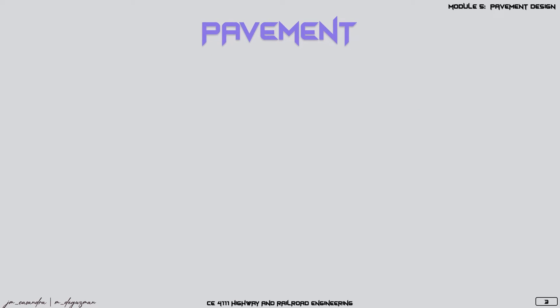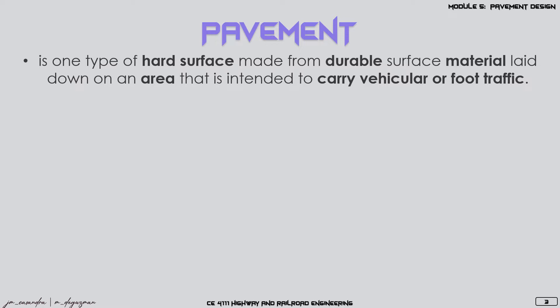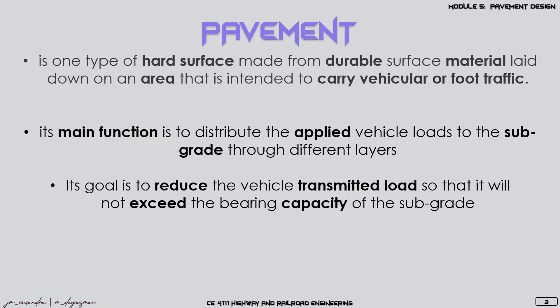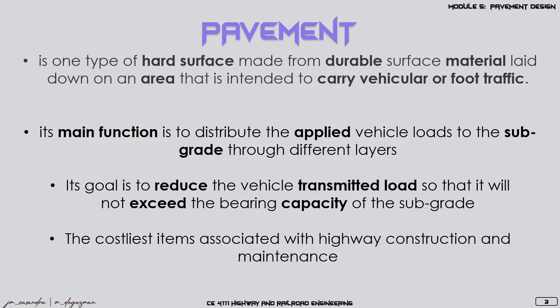A pavement is a hard surface made of durable surface material laid down on a roadway or in an area intended to carry vehicular or foot traffic. Its main function is to distribute applied vehicle loads or traffic loads to the subgrade through the different layers. Its goal is to reduce vehicle-transmitted loads so they will not exceed the bearing capacity of the subgrade. The pavement is usually the costliest item associated with highway construction and maintenance.